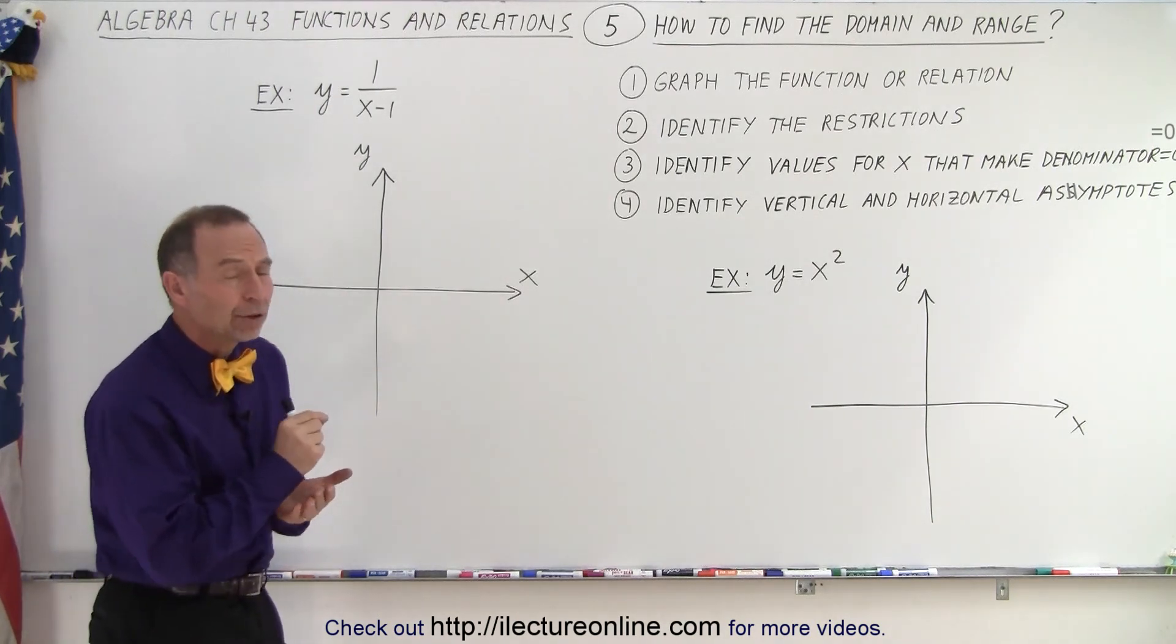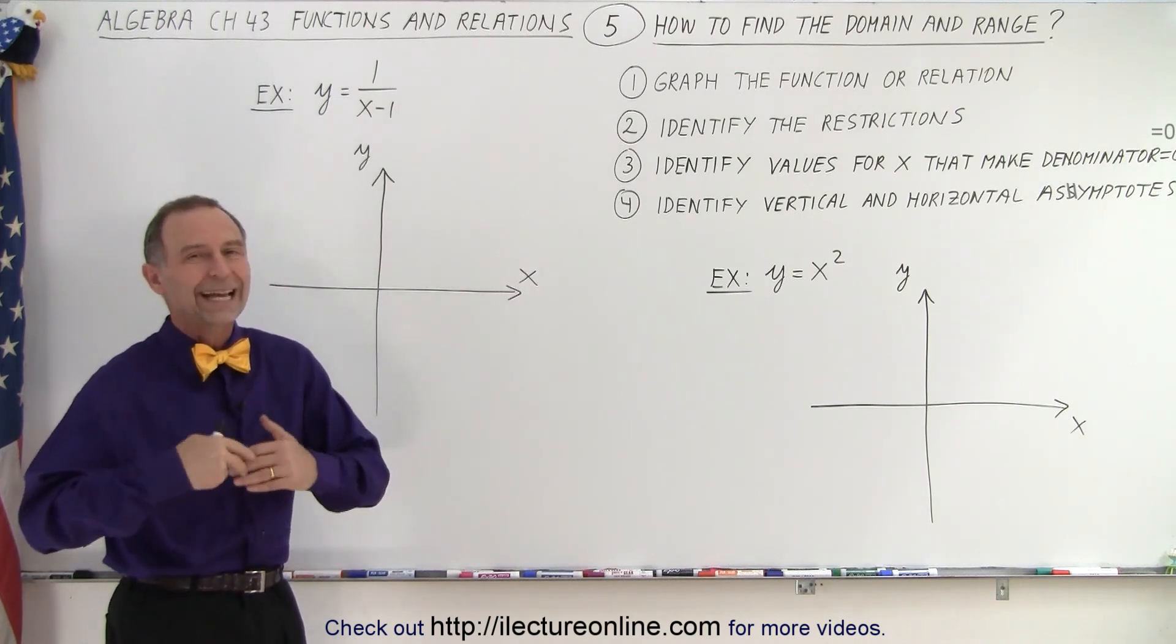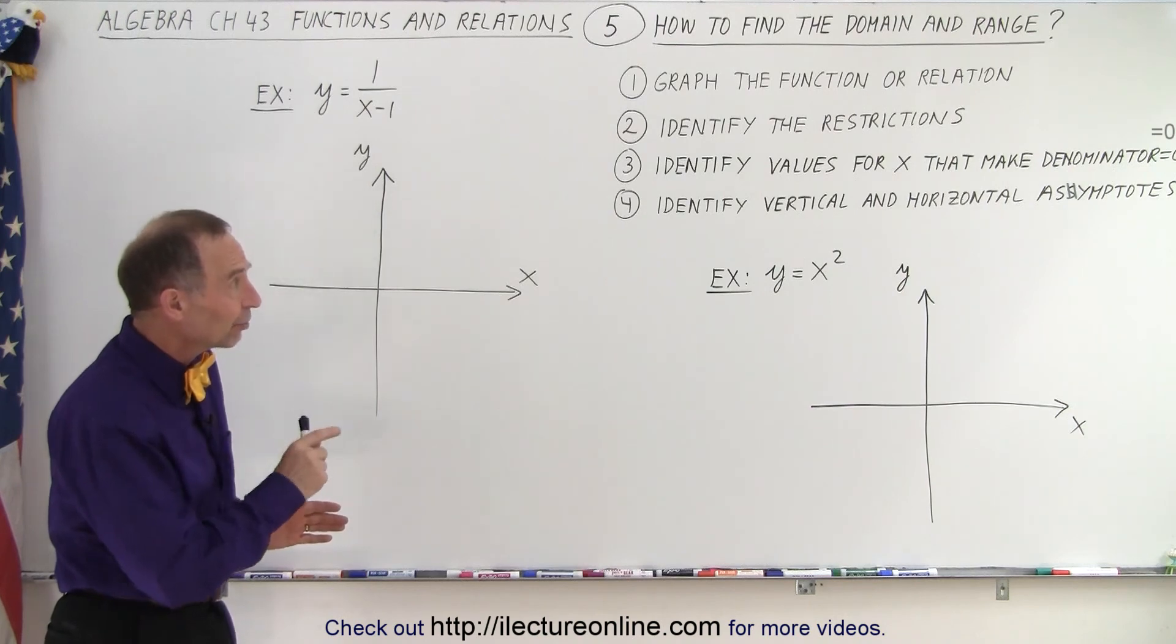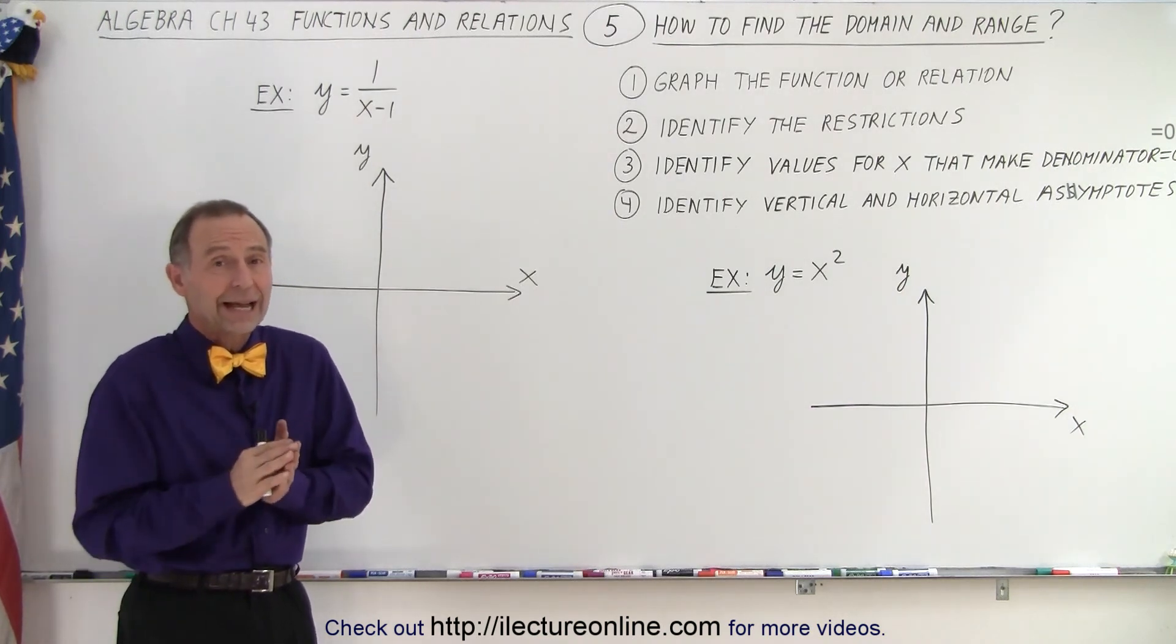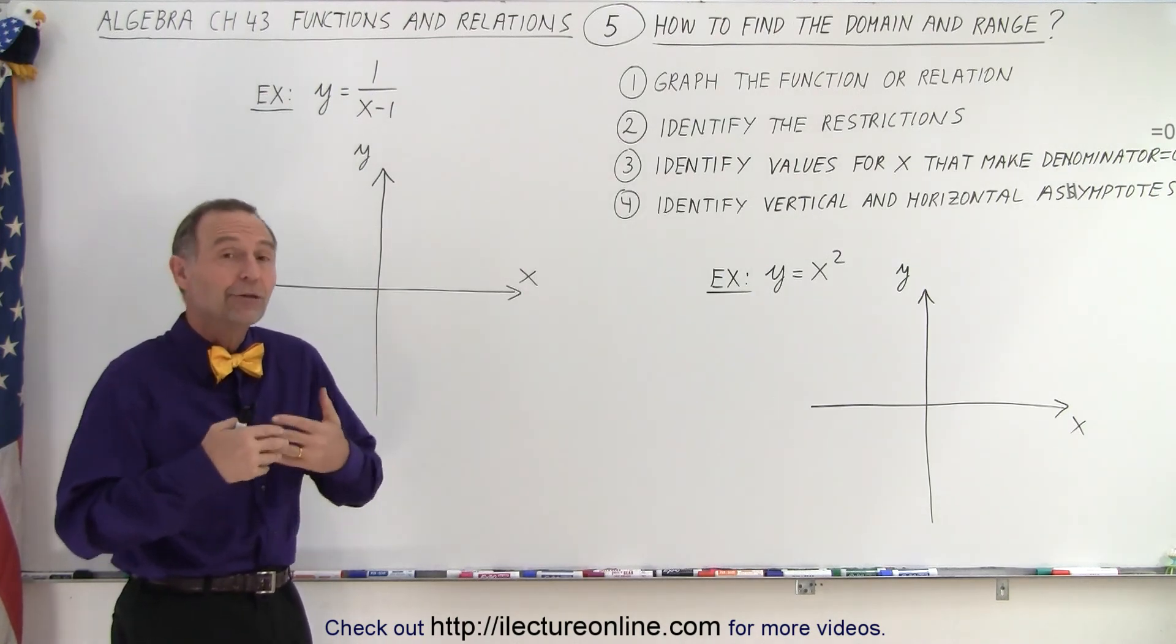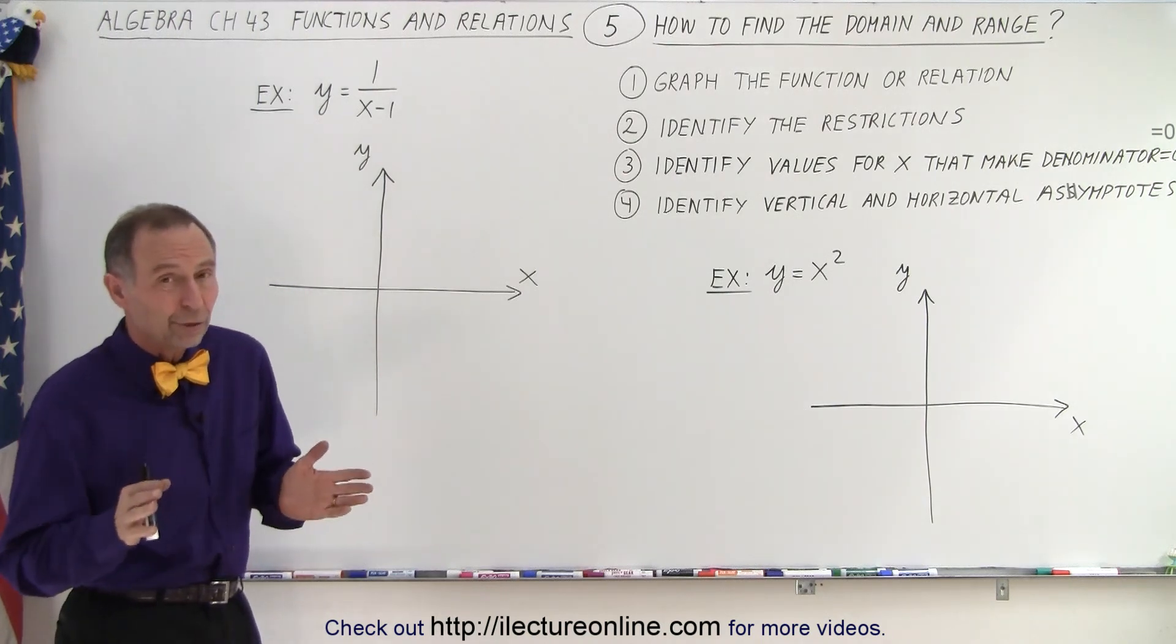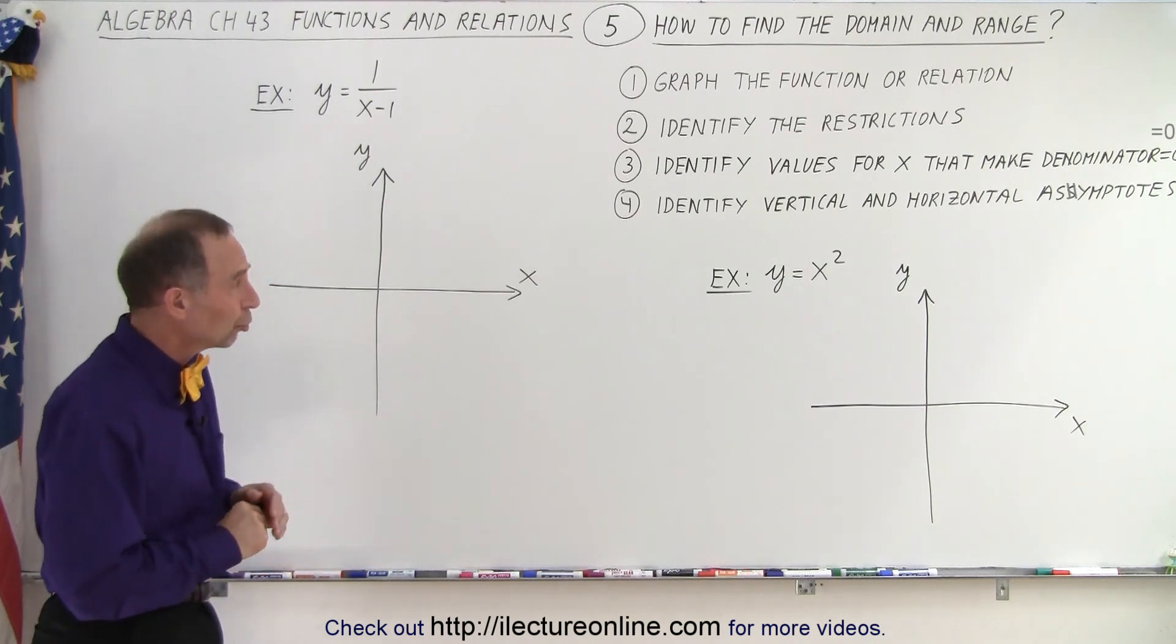Secondly, identify the restrictions. There may be certain things that are prohibited or that cannot be possible. Thirdly, identify the values for x that make the denominator equal to zero. You cannot have a zero denominator, because then you end up with an undefined fraction. Therefore, anything that will make the denominator zero needs to be eliminated from the solution.